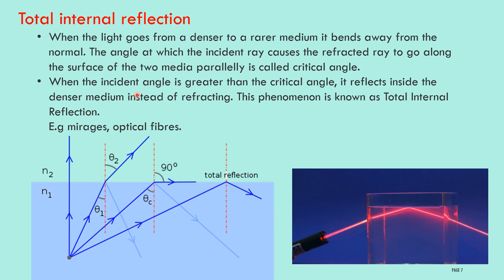When the incident angle is greater than the critical angle — more than 90 degrees — the ray reflects inside the denser medium instead of refracting. This phenomenon is known as total internal reflection. The incident ray gets reflected within the denser medium. This process we call total internal reflection. You can observe this in mirages and also in optical fibers. This is a very important topic you have to remember.